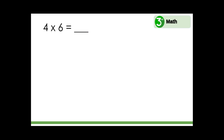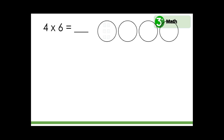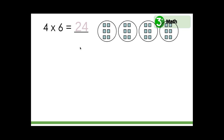Four times six — loops and groups. We have four loops with six ones in each loop. How much is this? Six, twelve, eighteen, twenty-four. Four times six equals twenty-four.